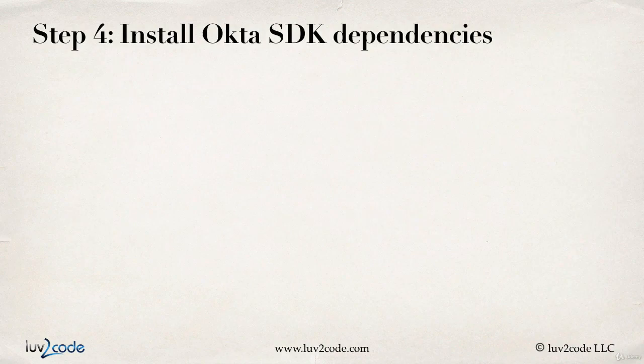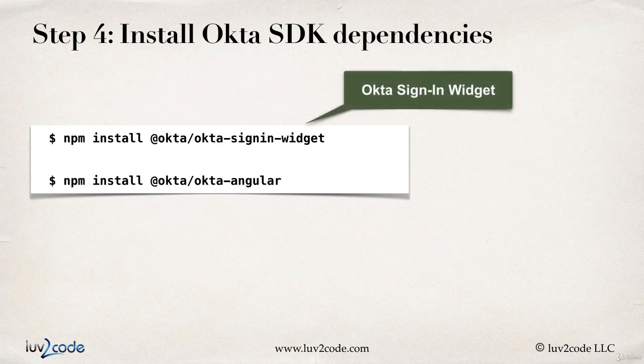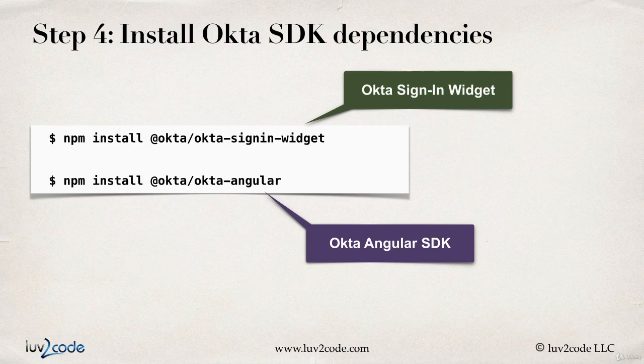To install the Okta SDK dependencies, you simply run the npm install commands: npm install @okta/okta-signin-widget and npm install @okta/okta-angular. Install those two dependencies and then you're ready to go.